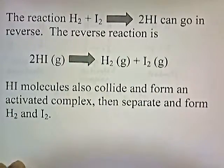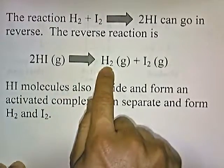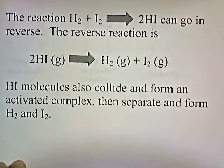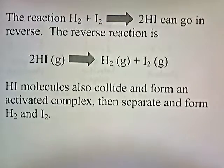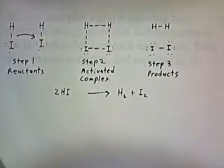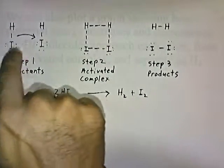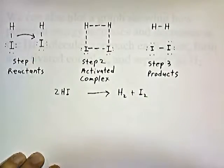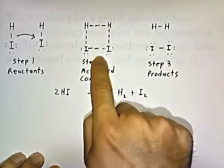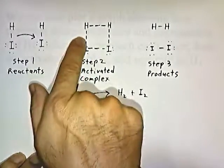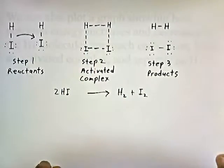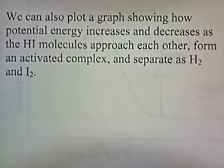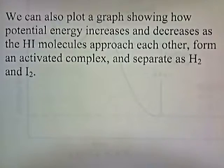This reaction can go in reverse. Two hydrogen iodide molecules will collide and form hydrogen gas and iodine gas. The hydrogen iodide molecules collide, form an activated complex, then separate and form hydrogen and iodine. When they collide, bonds start to form here and bonds start to break here. When they separate, a bond is fully formed to produce hydrogen and iodine molecules, and the bond between the iodide is completely broken. We can also plot a graph showing how potential energy increases and decreases as the hydrogen iodide molecules approach each other, form an activated complex, and separate as hydrogen and iodine.